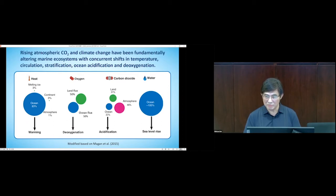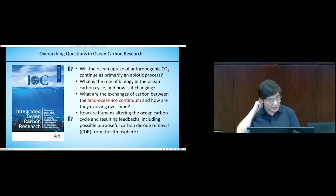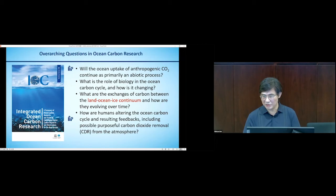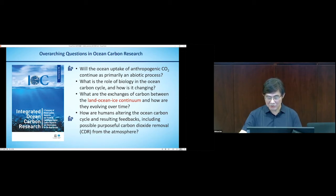The ocean is both an actor against climate change and a victim of climate change. I've adopted this IOC ocean carbon research report just released a few months ago, which lists the overarching questions in ocean carbon research: Will the ocean uptake of anthropogenic CO2 continue as a primarily abiotic process? What is the role of biology? How does carbon exchange along the land-ocean continuum evolve over time? And most importantly, how are humans altering the ocean carbon cycle and its resulting feedbacks, including the possible purposeful carbon dioxide removal from the atmosphere?